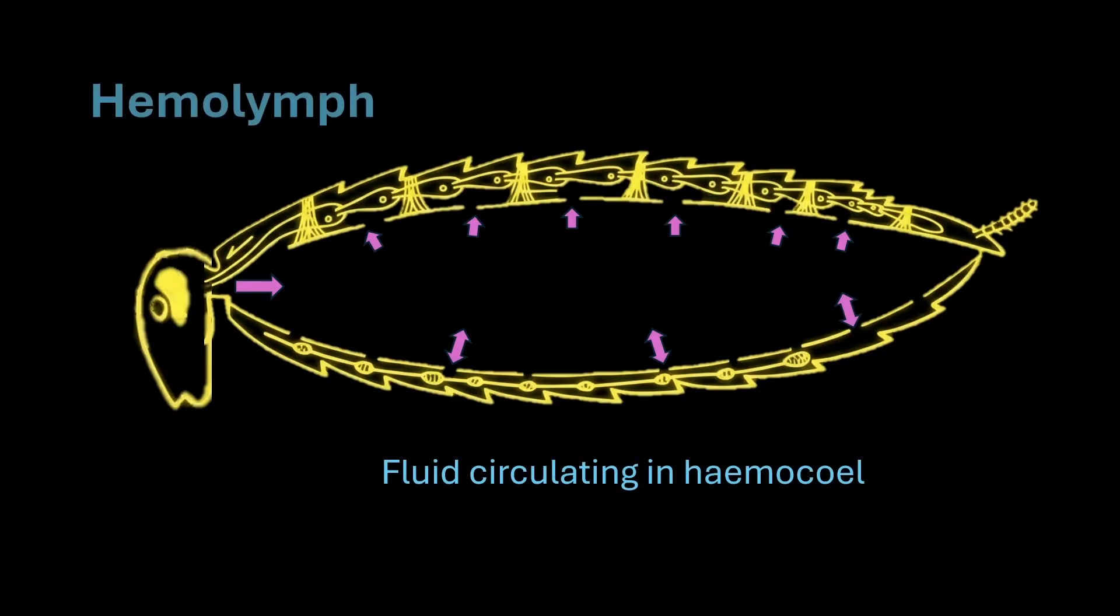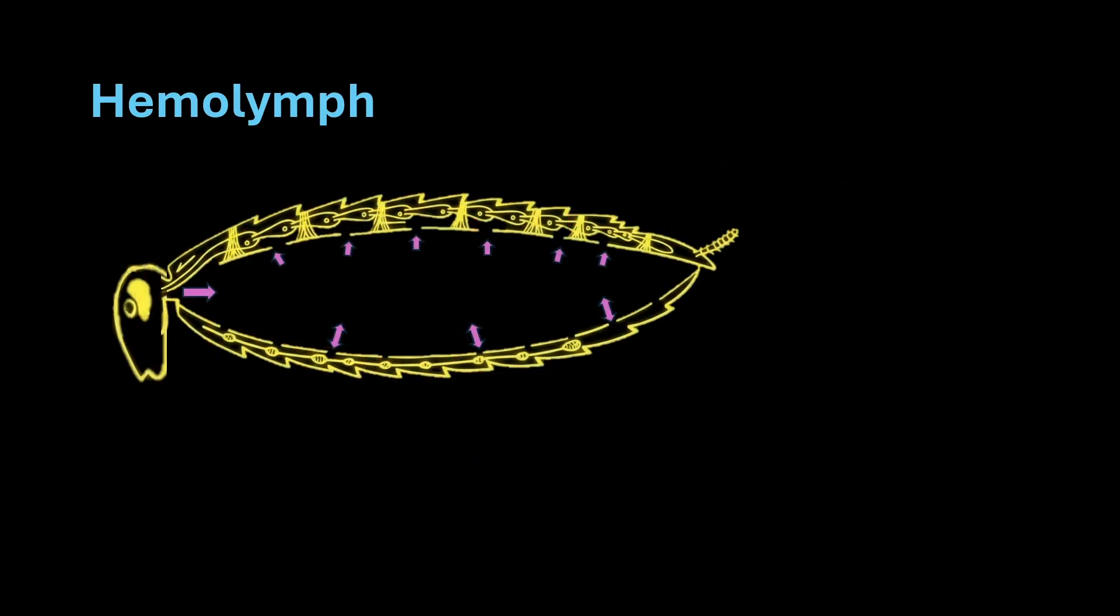The fluid circulating within these hemocele is called the hemolymph, and this is essentially the cockroach's blood. It is a colorless fluid as it lacks the pigment like hemoglobin present in our blood, and therefore this hemolymph is not capable of transporting oxygen. However, the main function of the hemolymph is to transport nutrients, hormones, and collect waste products.